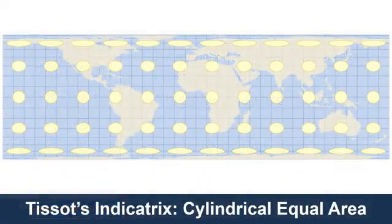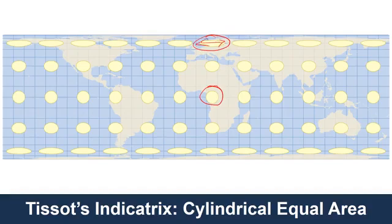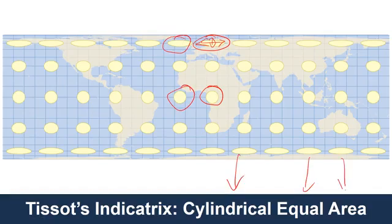For example, the Tissot's Indicatrix for the cylindrical equal area map shows that we have circles at the equator, but as we move towards the poles they're quite squashed — stretched in the horizontal direction and squished in the north-south direction. It turns out, though, that these circles have the same area as they do at the equator, in terms of actual coverage area, which is why it's called a cylindrical equal area projection — the areas are being maintained.